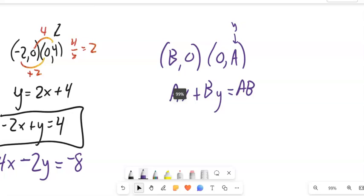And that will always work. And notice that's a general form, right? Ax plus By equals C, where C is A times B.